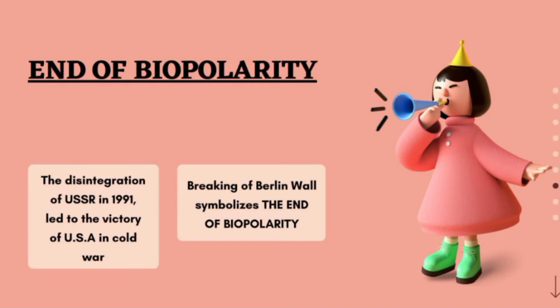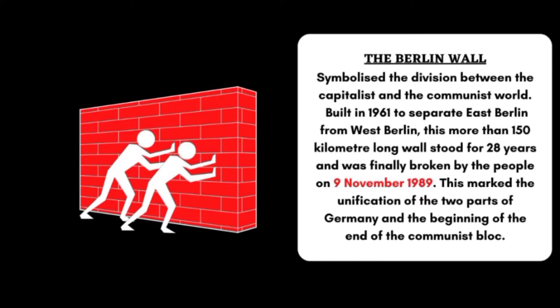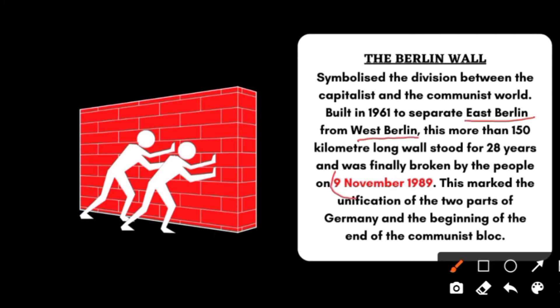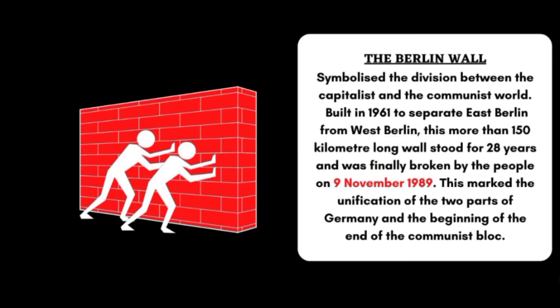In our NCERT, the first page features the Berlin Wall. The Berlin Wall separated East Berlin from West Berlin. But on 9 November 1989, people broke this wall down, and the beginning of this incident is considered the start of the disintegration of the USSR. So this was a brief introduction to the USSR — its formation, and ultimately its disintegration.